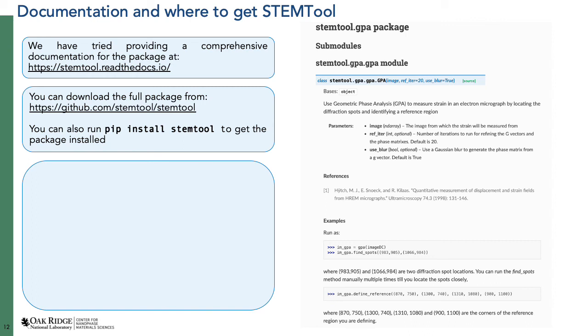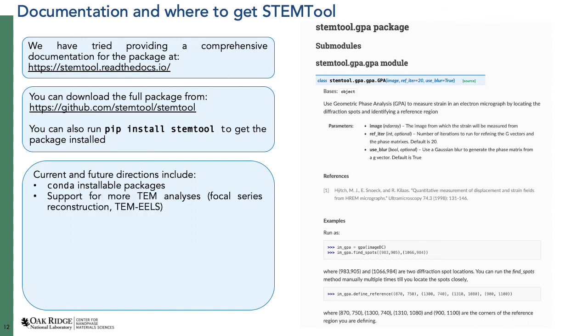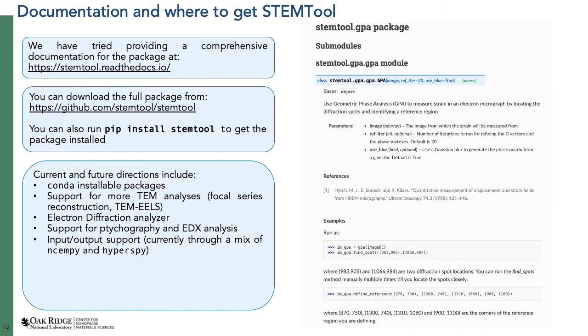Some current and future work we are pursuing, in order of importance: First, we want to make this package conda-installable in addition to pip, because Anaconda has a much better package manager. Second, we want to add more support for TEM — not just pure STEM — including focal series reconstruction and TEM EELS. Third, we want to add an electron diffraction analyzer for analyzing electron diffraction, HRTEM diffraction, and CBED datasets. Fourth, we want to add support for ptychography and EDX analysis.